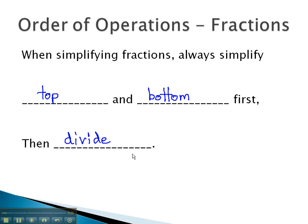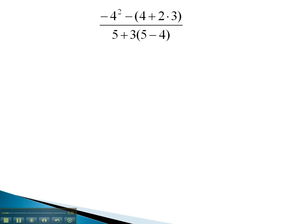Let's take a look at some examples where we simplify the top and bottom, and then divide our results. In this expression, while it might look quite complex, we'll start by focusing just on the top. Negative 4 squared, minus 4, plus 2, times 3.